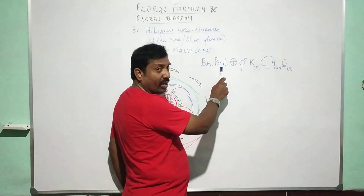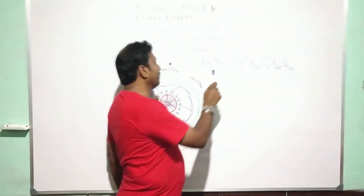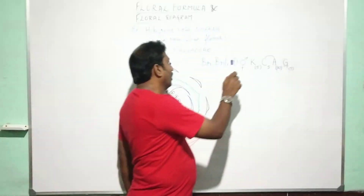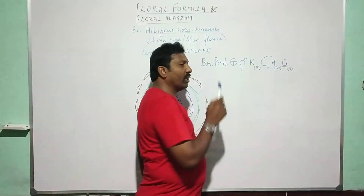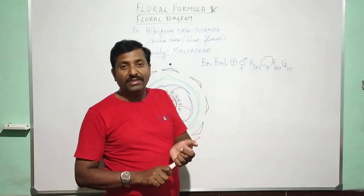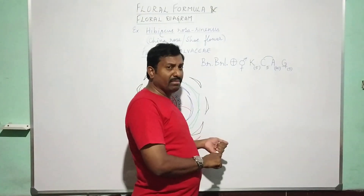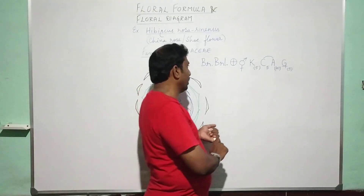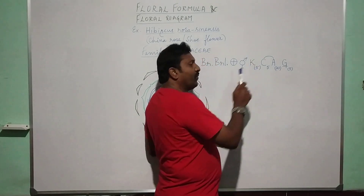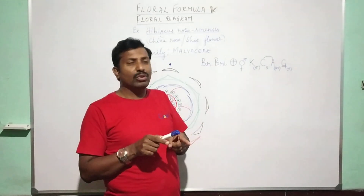Floral formula once again: bractiate — bract is present; bractiolate — bracteoles are present; actinomorphic — radially symmetrical; bisexual — both essential parts of the flower, that is androecium and gynoecium, are present in a single flower. K is with 5 sepals and it is gamosepalous.